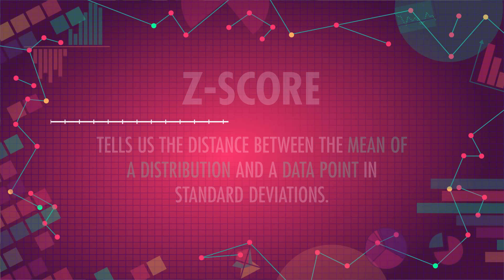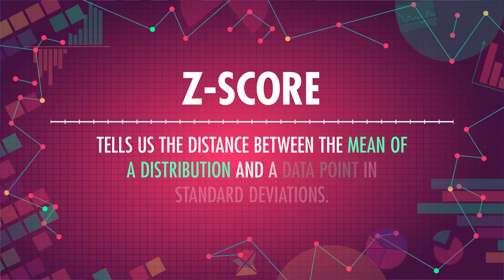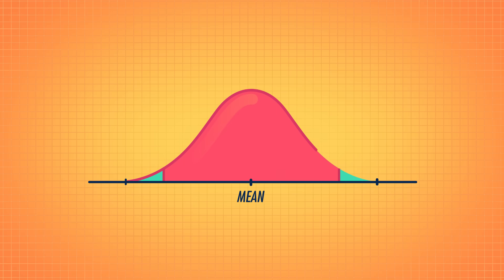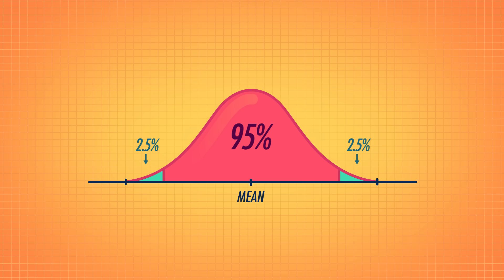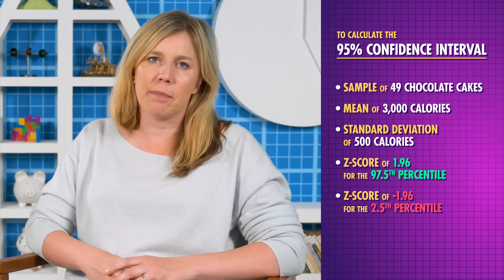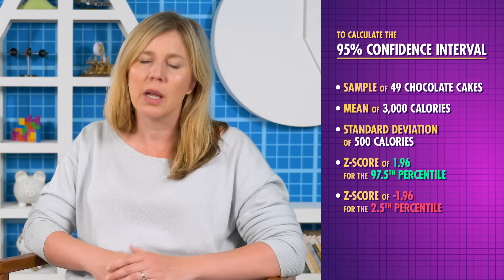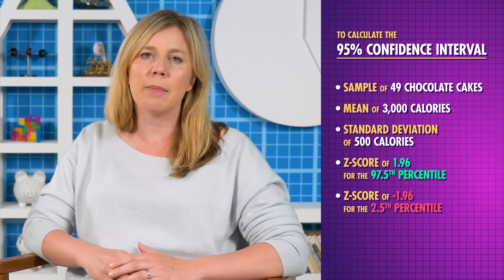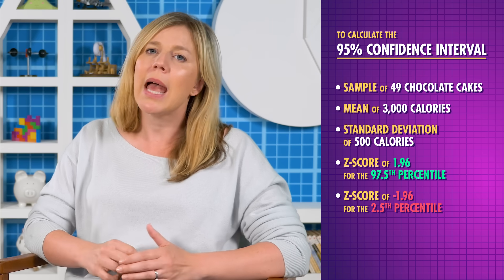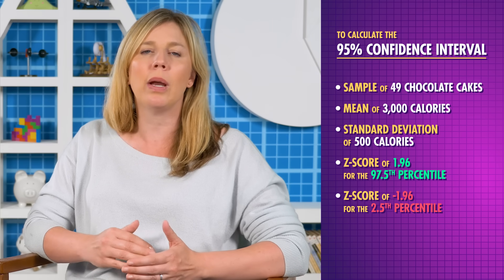Now that we know what a confidence interval is, it might be useful to calculate it. A 95% confidence interval is the range that contains the middle 95% of the values of our estimated sampling distribution. To get that range, we can use a z-score — a z-score tells us the distance between the mean of a distribution and a data point in standard deviations. We want the middle 95% of the data, so we want our cutoffs to be at the 2.5th percentile and the 97.5th percentile, so that 95% of the values are within our range, and 5% (2.5% on either side) are not. To calculate the 95% confidence interval for a sample of 49 chocolate cakes with a mean of 3,000 calories and a standard deviation of 500 calories, we can use a z-score of 1.96 (from a table) to calculate the 97.5th percentile, and a z-score of negative 1.96 to calculate the 2.5th percentile.